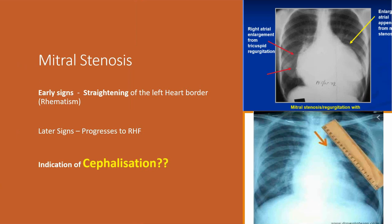Now focusing on mitral stenosis: there are two signs to look for — one early and one late. The early sign is the straightening sign. This means a straightening of the left heart border — the bulging of the left atrium toward the left ventricle becomes less pronounced, giving a straighter appearance. That's the early sign of mitral stenosis.